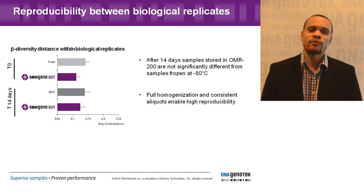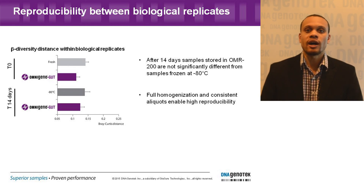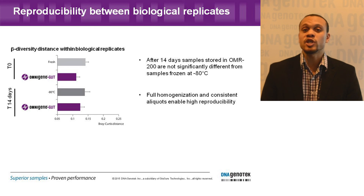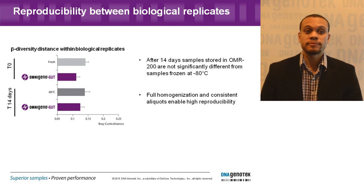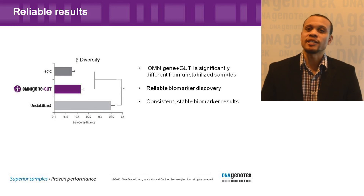We're showing data confirming that you will get reproducible results. As mentioned at the start of the webinar, there has been some difficulty in reproducing results from one experiment to the next. However, with our samples, the reproducibility is high. We show that in comparison with the gold standard — which is processing fresh within three hours and also freezing at minus 80 — the OmniGene Gut sample is interchangeable with these gold standards. Whereas the unstabilized sample gives you a low quality input: you might as well be collecting from your neighbor.